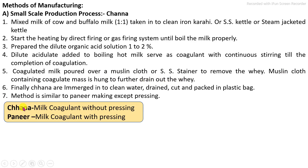After straining, the muslin cloth containing the coagulated mass is hung to further drain out the whey, and this product is called chana. If this chana is pressed using paneer-making machines, we finally get paneer. The difference between chana and paneer is that paneer undergoes a pressing process, while chana is without pressing. Finally, the prepared product is immersed in clean chilled water for at least 10 to 15 minutes, then drained, cut, packed into plastic bags, and stored under refrigeration or frozen condition.